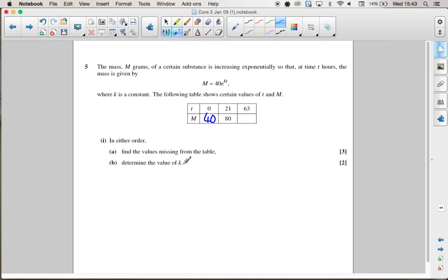The next thing I'm going to work out is k, and I'm going to work that out by using that when t equals 21, m equals 80. If I substitute those into the equation, I can solve this for k.